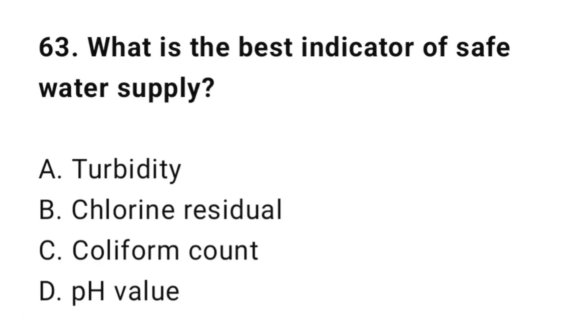Question number sixty-three: What is the best indicator of safe water supply? The correct option is C: Coliform count.